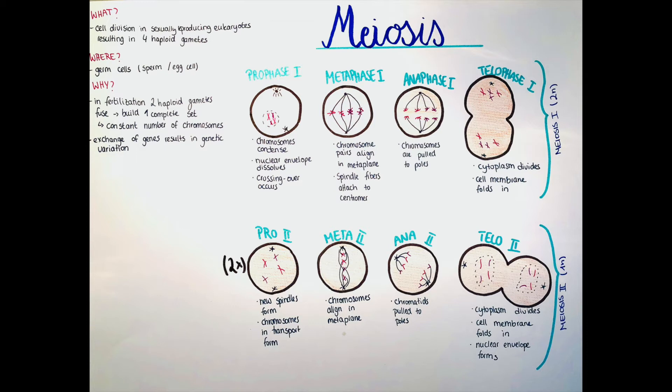The next phase is metaphase one. This is like in mitosis also that the chromosome pairs align in the metaphase plane, and then the spindle fibers attach to the centromere. In the next phase they will pull them apart from each other. But here the spindle fibers only attach.